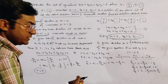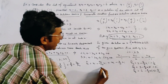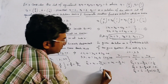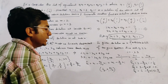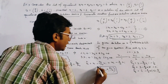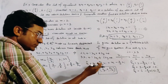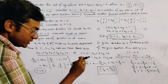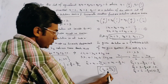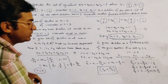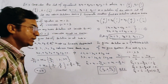So we get a basic feasible solution of the system as (1/2, 0, 5/2). Since all variables are greater than or equal to 0, this solution is feasible. And since at least one variable is 0, this is a basic feasible solution.